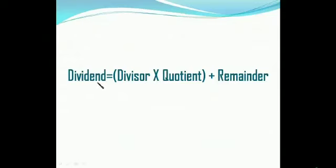When you want to verify your answer, use this formula: Dividend = Divisor × Quotient + Remainder. This formula is used for verification of your sums.